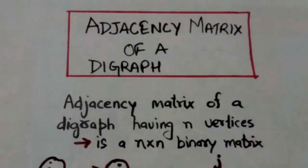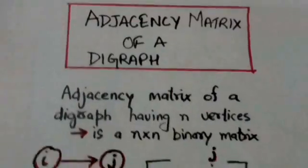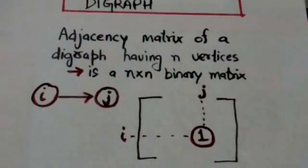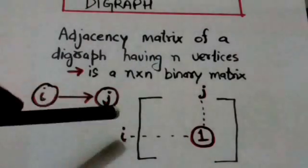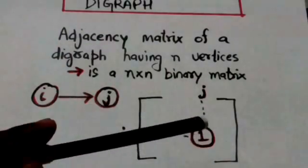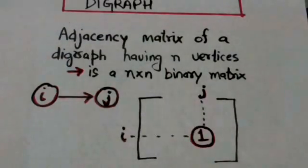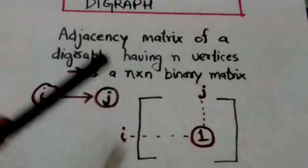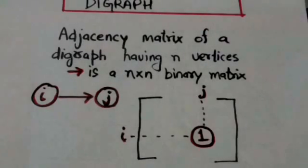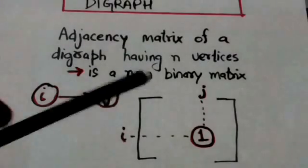Hello friends, welcome back. In this tutorial we will study about the adjacency matrix of a digraph. The adjacency matrix of a digraph having n vertices is an n cross n binary matrix in which the entry at the ith row and jth column is 1 if and only if there is an arc from vertex i to vertex j. Each diagonal entry in the adjacency matrix of a digraph is zero.